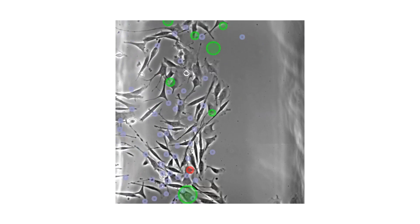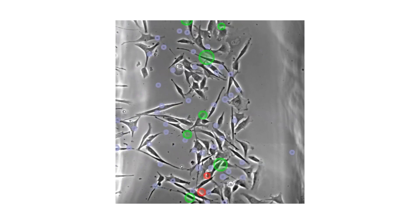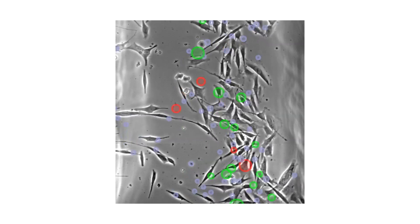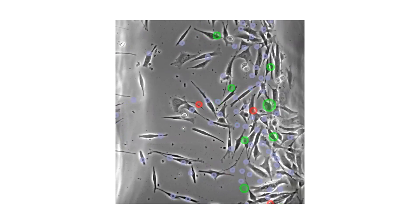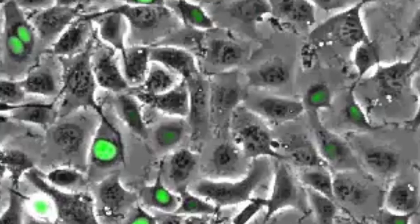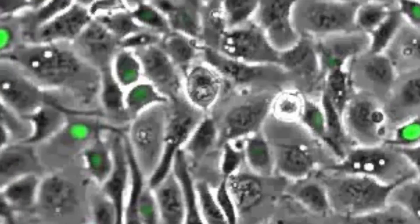The team filmed melanoma cells in the lab and saw they moved rapidly in the same direction. In this video, the green circles show the cells moving forward, and the red circles show the handful of cells that switch direction.